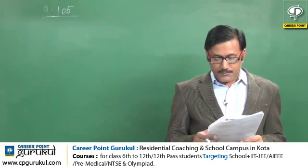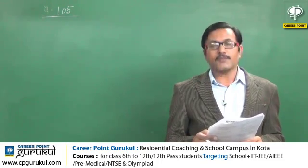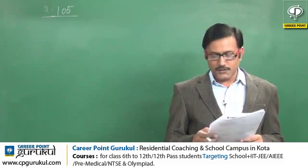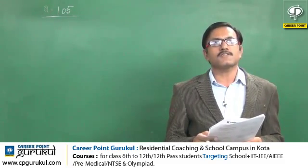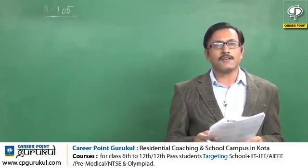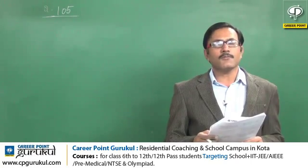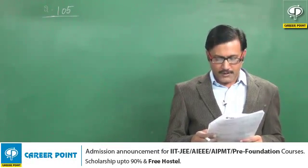Third option: rough endoplasmic reticulum — this is stated to be involved in the synthesis of glycogen. This is also not true. Actually, the process of glycogenesis occurs in the smooth endoplasmic reticulum rather than the rough endoplasmic reticulum.